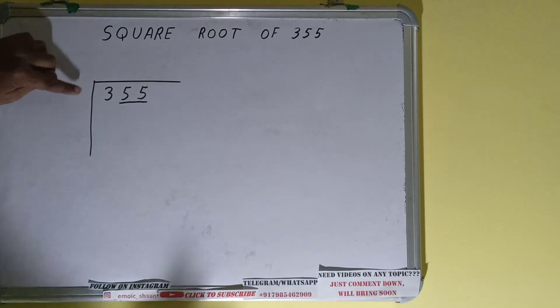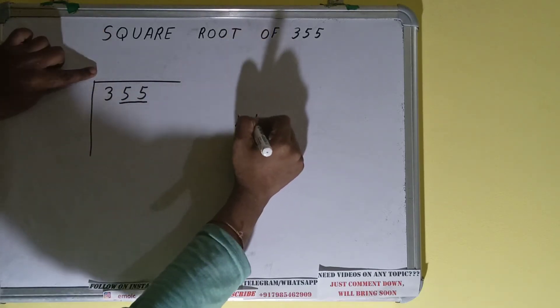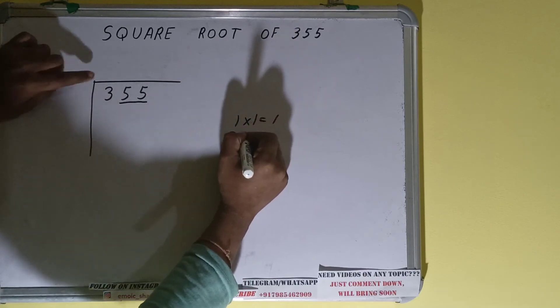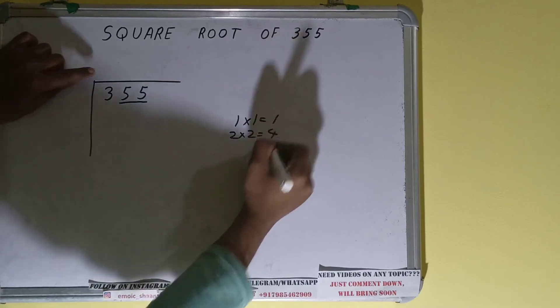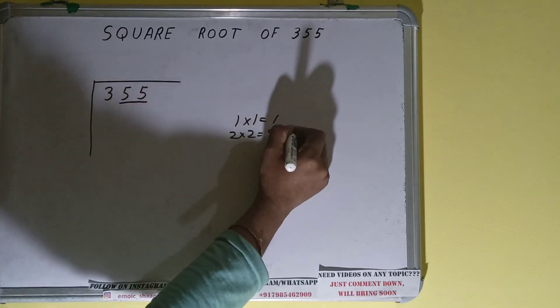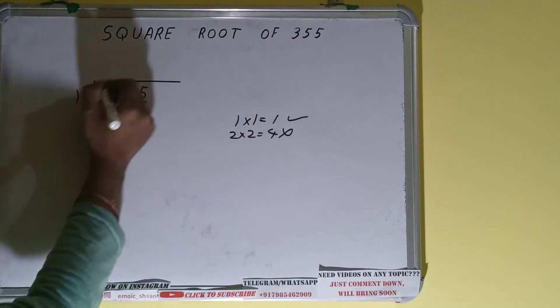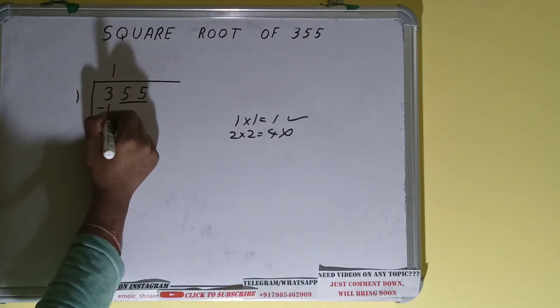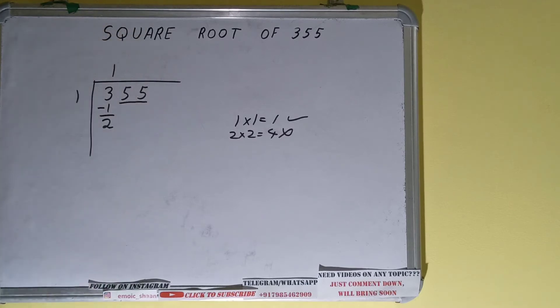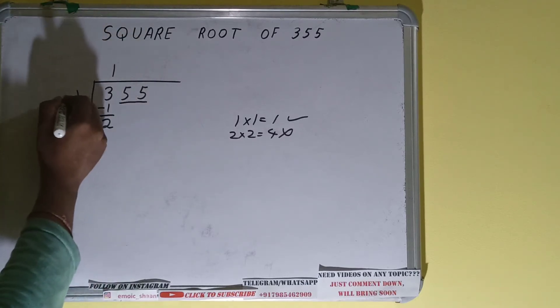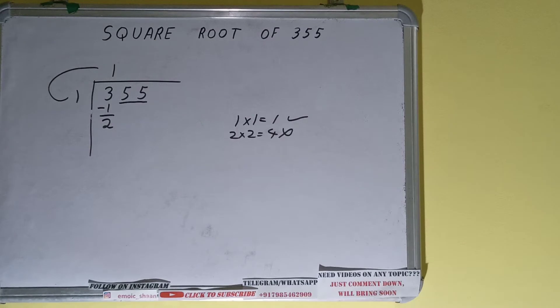The rule is whatever number we write here, we have to write here also. So if we write 1 here and 1 here it will give 1. If we write 2 here and 2 here it will give 4. Now we cannot use 4 because it is greater than 3, so we have to use this 1. So 1 here and 1 here will give 1, subtract it and 2 will be left.